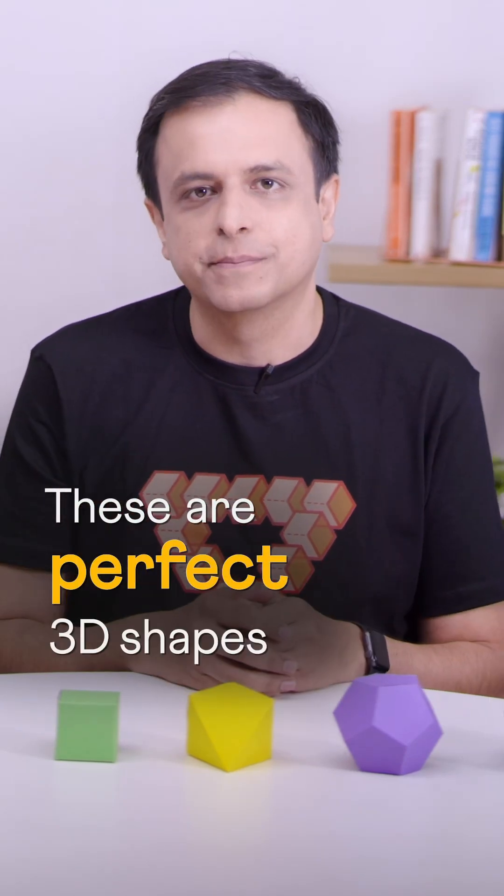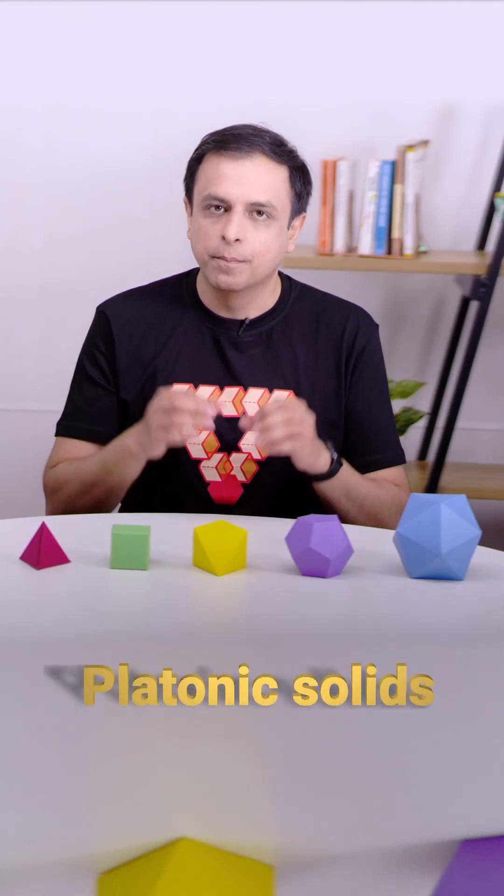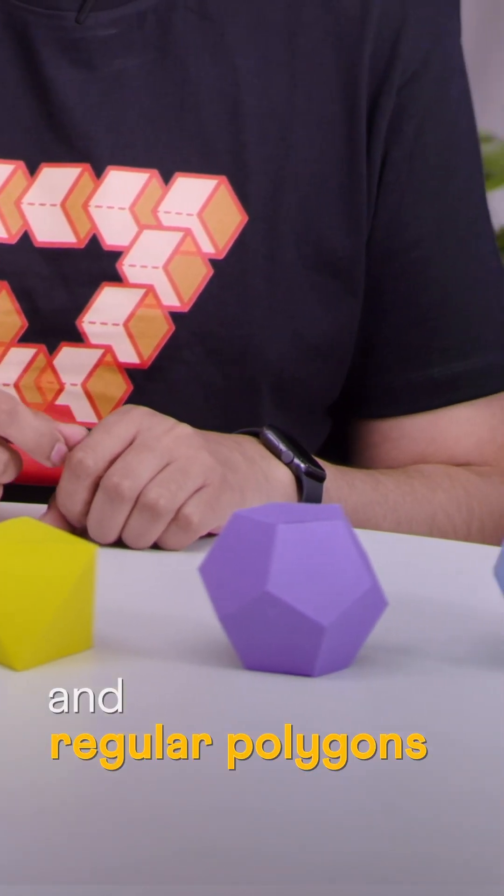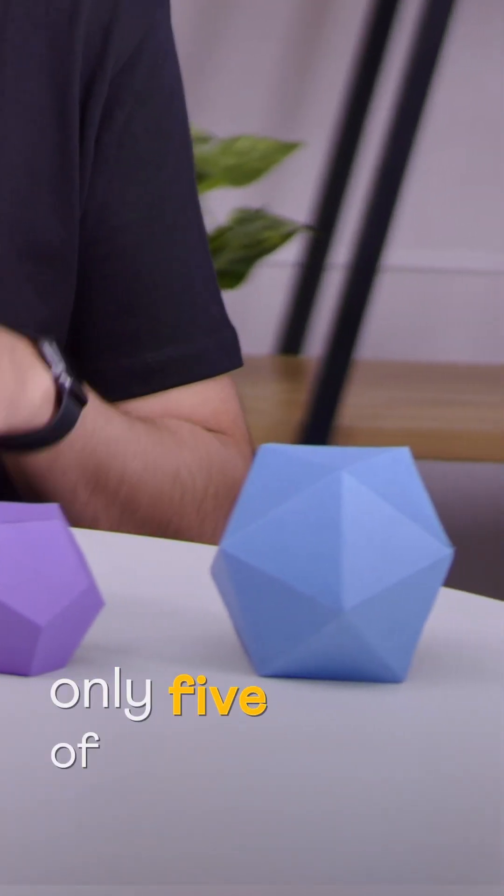These are the perfect 3D shapes, the platonic solids. Perfectly symmetrical, all faces identical and regular polygons. And there can be only five of them.